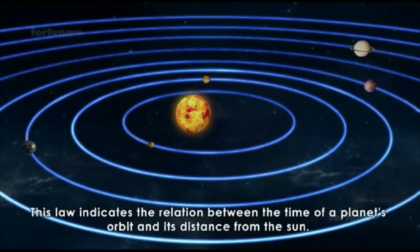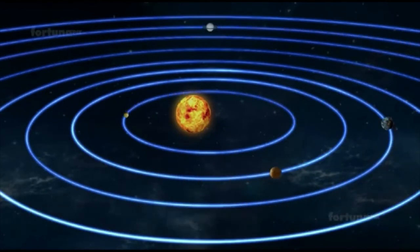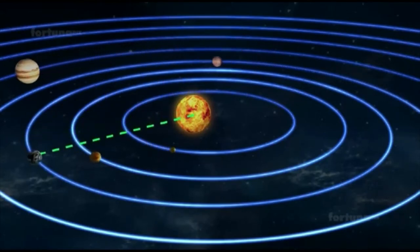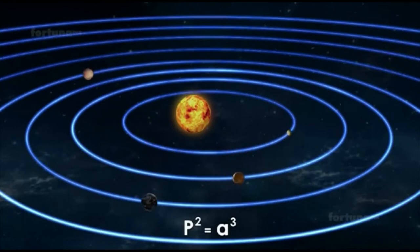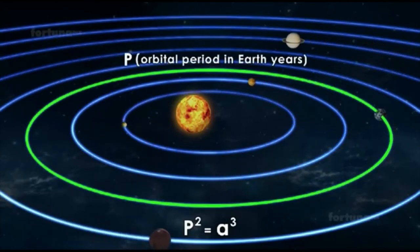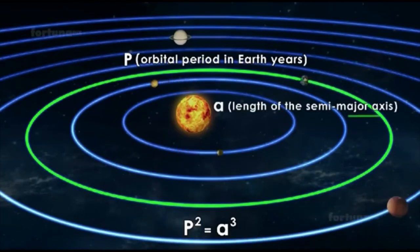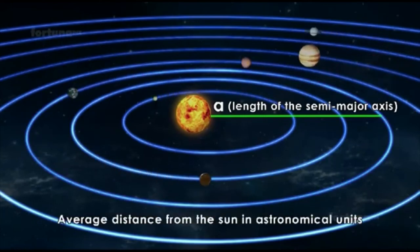This law indicates the relation between the time of a planet's orbit and its distance from the Sun. Using this relationship, if we know the duration of a planet's orbit around the Sun, we can find out its average distance from the Sun, or vice versa. P squared equals A cubed, where P is the orbital period in Earth years, and A is the length of the semi-major axis, which is the average distance from the Sun in astronomical units.